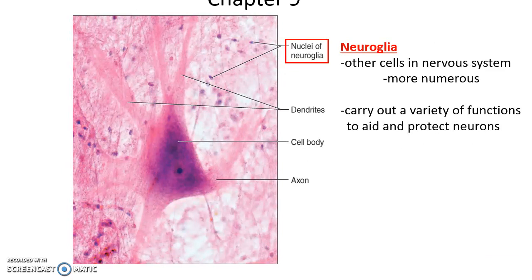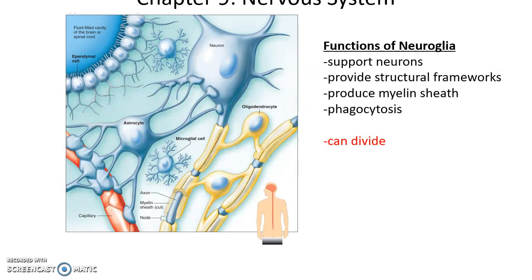Neuroglia are the cells in nervous tissue that help support, aid, and protect the neurons. It turns out neuroglia are more numerous than neurons. Functions of neuroglia include supporting neurons, providing a structural framework for nervous tissue, providing myelin sheath on the axons, phagocytosis to engulf pathogens, and notably, neuroglia can also divide.